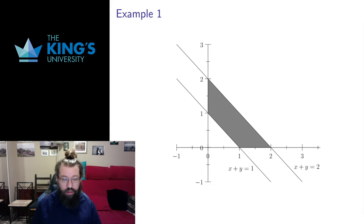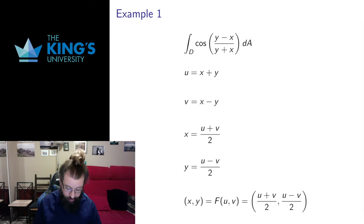In the first example I want to integrate over this trapezoidal region. And the function I want to integrate over this trapezoidal region is cosine of this weird rational function. Now what I want you to notice here is that I have x minus y and x plus y in the integrand.